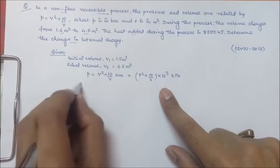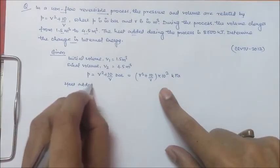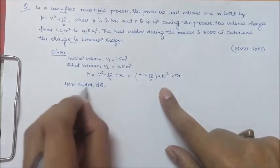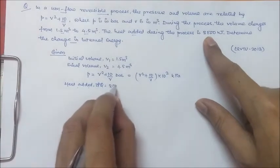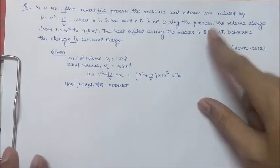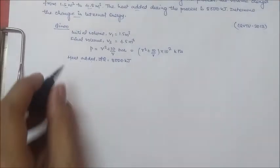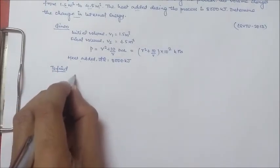Also, heat added, that is δQ. As it is added, it will be positive, so it's 8000 kilojoules. What other things are given in the question? Nothing more. And what do we have to find? We have to find dU.